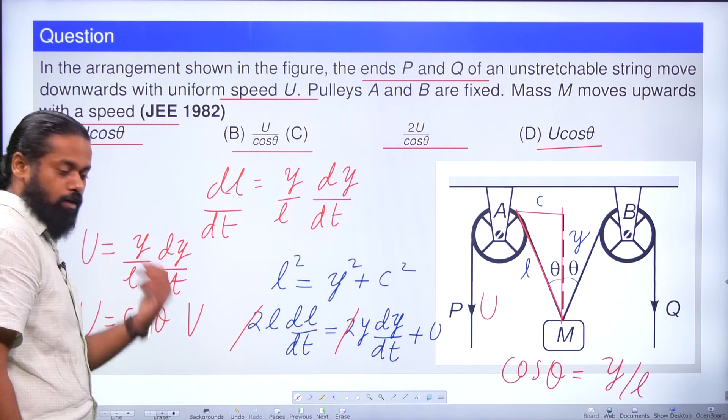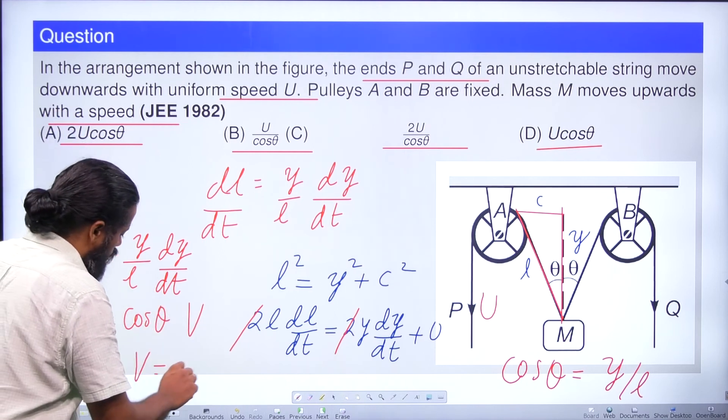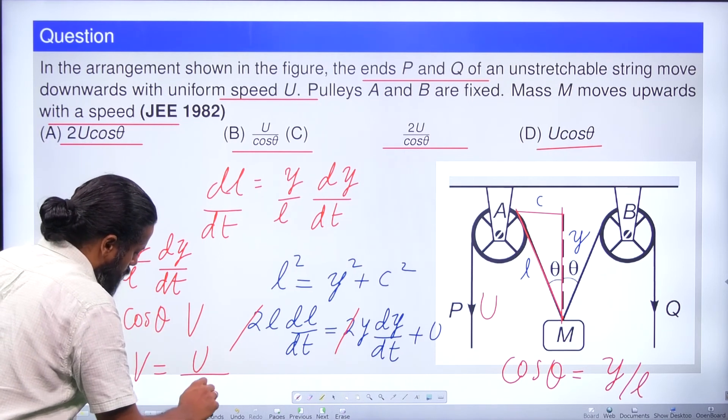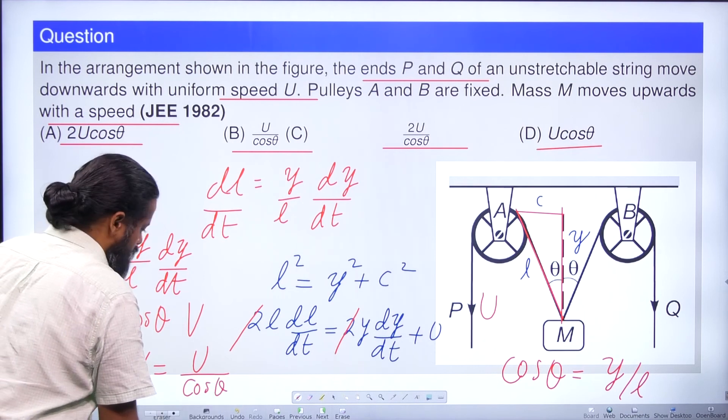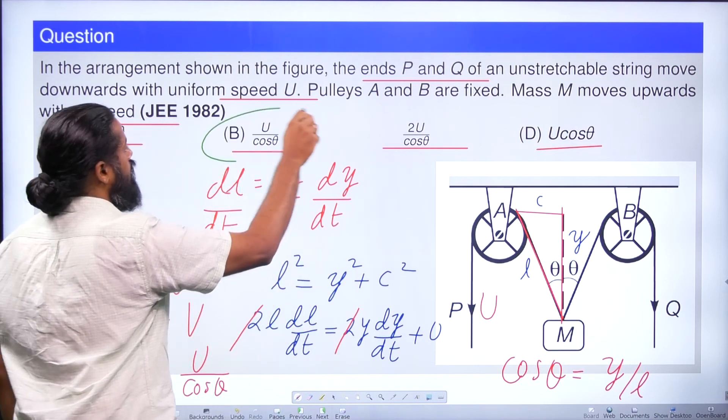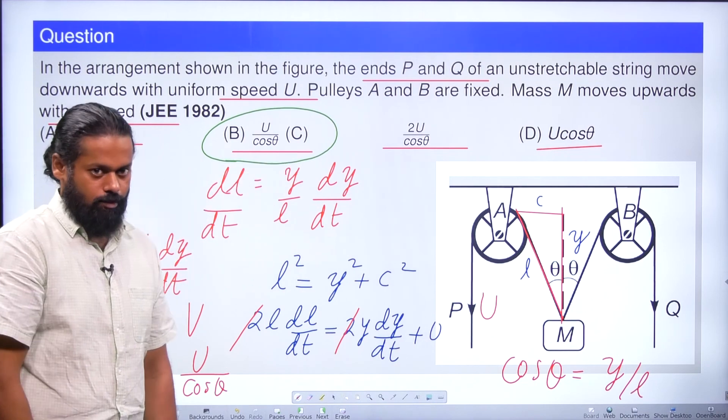So this is cos θ. We can write down U = cos θ × V, which is the unknown quantity we are trying to find out. So V = U/cos θ. That is the right answer given in option B: U by cos θ is the right answer here.